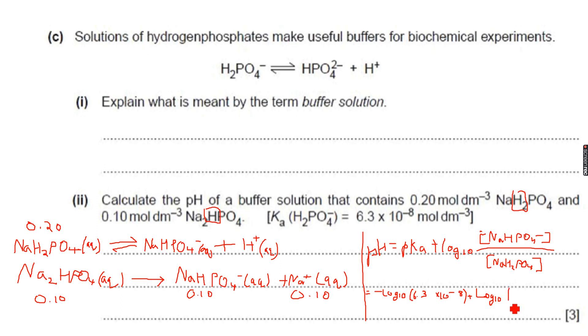I have 0.1 over here because the concentration of NaHPO4- is 0.1 over 0.2 because this is the concentration of the acid. So concentration of the conjugate base over the concentration of the acid.